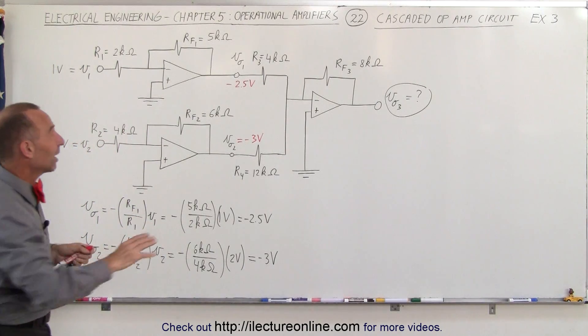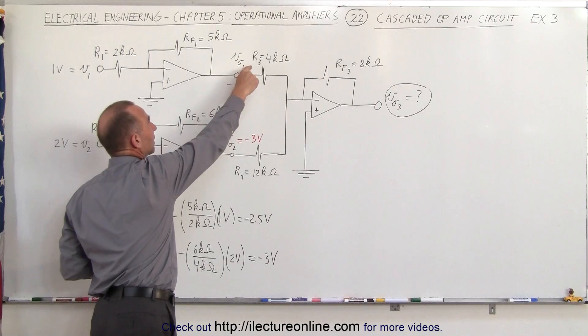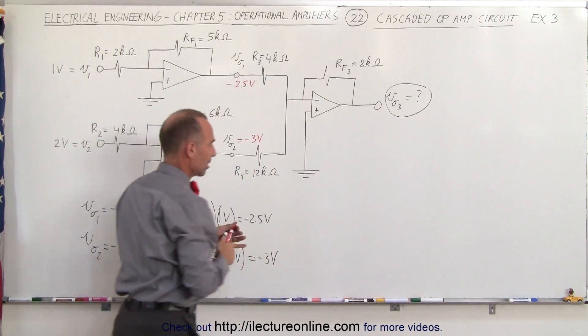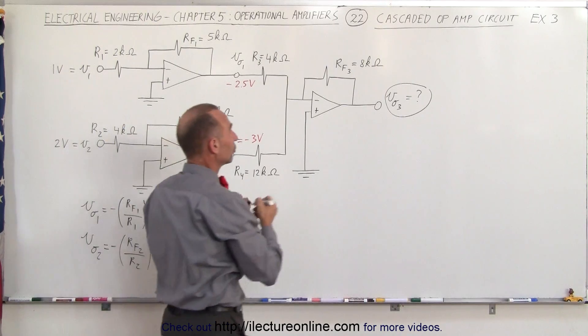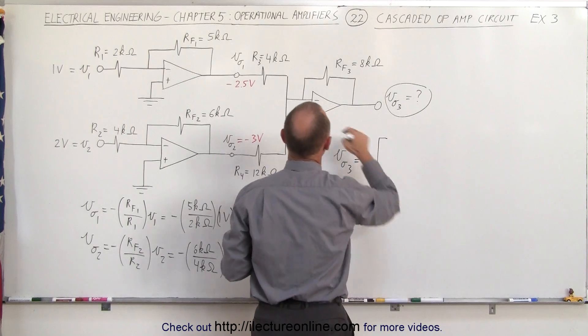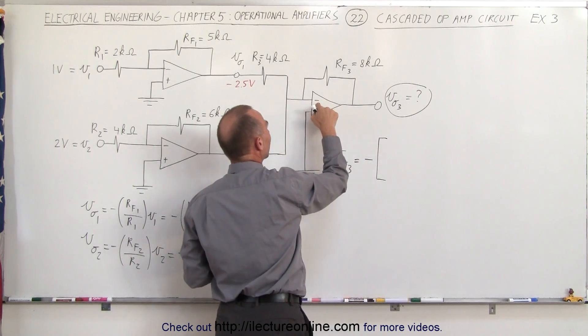Okay, now you see this as a summer, right? We're summing this input and this input together and we have the one feedback resistor here, which means that the output voltage V03 is equal to the negative, because we're connecting these to the negative input.